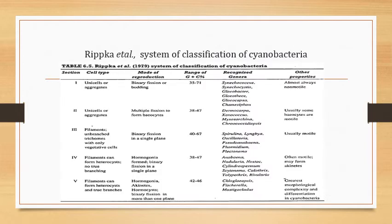Ripka et al. in 1978 gave a system of classification, dividing cyanobacteria into five subgroups on the basis of physiology, cell constituents and DNA characteristics. First: unicellular or aggregate, mode of reproduction by binary fission or budding. Second: unicellular or aggregates, mode of reproduction by multiple fission. Third: filamentous unbranched filaments, mode of reproduction by binary fission. Fourth: filaments that form heterocysts, mode of reproduction by hormogonia formation or binary fission. Fifth: filaments that can form heterocysts with true branches, mode of reproduction by hormogonia and binary fission.